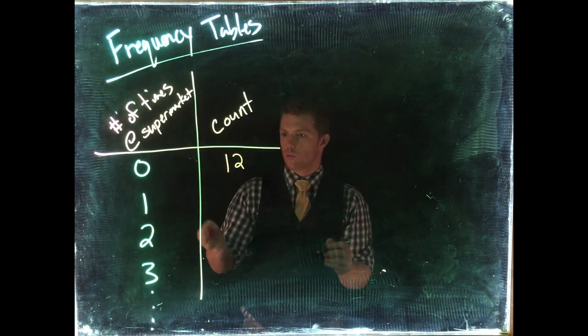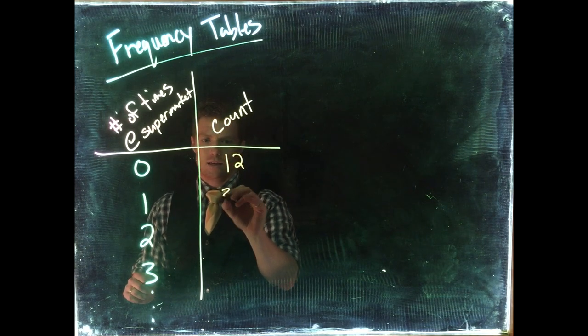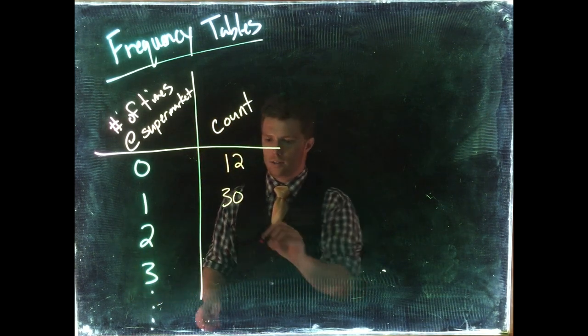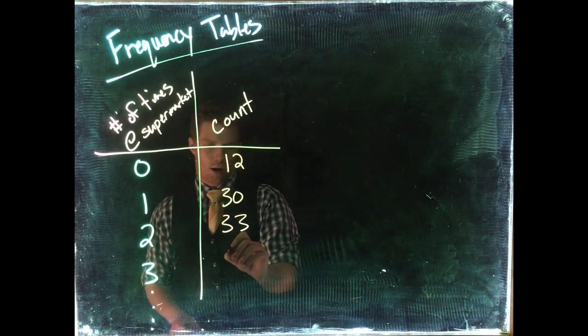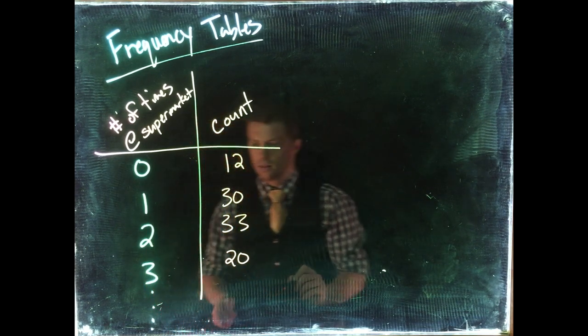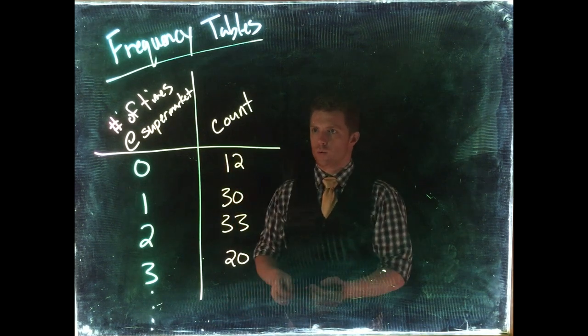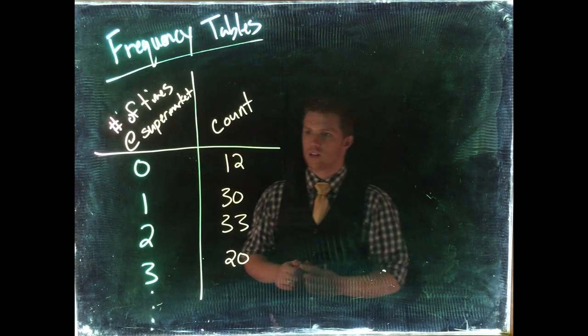We'd count how many people there were, so we'd count up maybe twelve. And then we'd say how many times did you go to the supermarket once, we'd say that it'd be like thirty, twice would be thirty-three, three times would be dropping back down to maybe twenty, and so on and so forth. And this helps us organize our data.